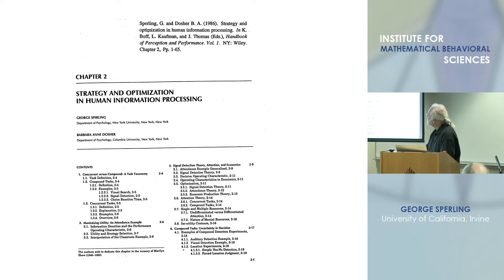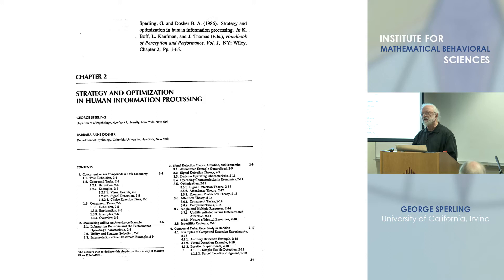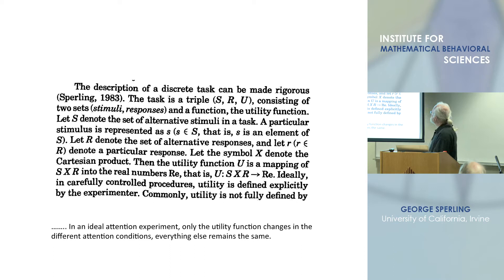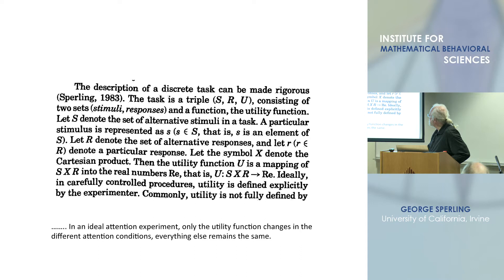Barbara Dozier and I wrote a chapter on strategy and optimization for a handbook — it would have been 300 pages with 105 figures, but we never got around to publishing it as a book. Jean-Claude helped me define what a task is — I'd never thought of defining what a task is. He persuaded me that a task is a triple of stimuli, responses, and a utility function. That's really the critical thing — you take all combinations of stimuli and responses and map that into the reals, and that's your utility.